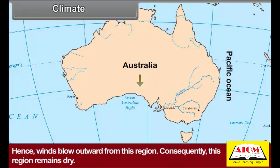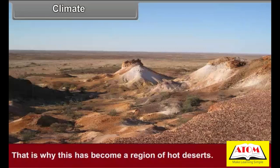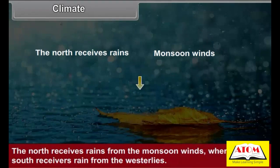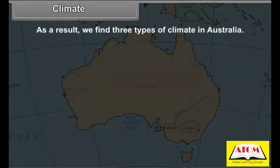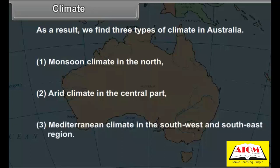As a result, the central part of the continent receives low rainfall. Moreover, the central part lies in the hot tropical high pressure belt, so winds blow outward and this region remains dry. Rainfall in this region is less than 250 millimeters, which is why it has become a region of hot deserts. The north receives rains from monsoon winds, while the south receives rain from the westerlies, resulting in three types of climate: monsoon in the north, arid in the central part, and Mediterranean in the southwest and southeast.